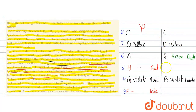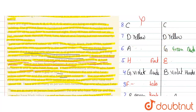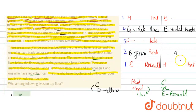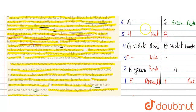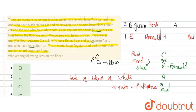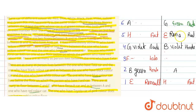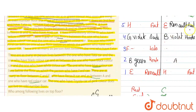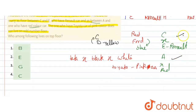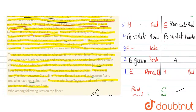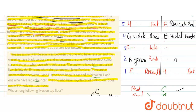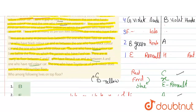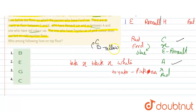If C is placed at a certain position and E is placed two floors away, then A and the red car also have two floors between them. So E gets confirmed with the red color car and the Renault car. Then, below red comes the Ford car, and below Ford comes the blue color car.